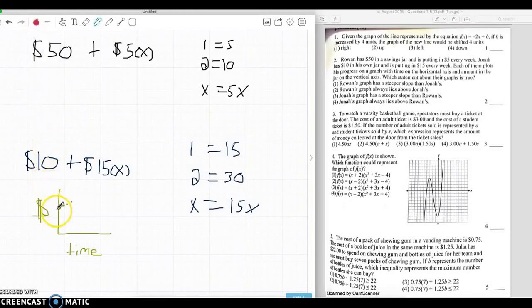Whereas Jonah, he's going to start all the way down here at like $10. But he's going to jump up $15 each week. So he's going to be $25, and then $50, and then he's going to keep going. So his line is going to look like this, and Rowan's line is going to look like this. The question asks which statement about their graphs is true.